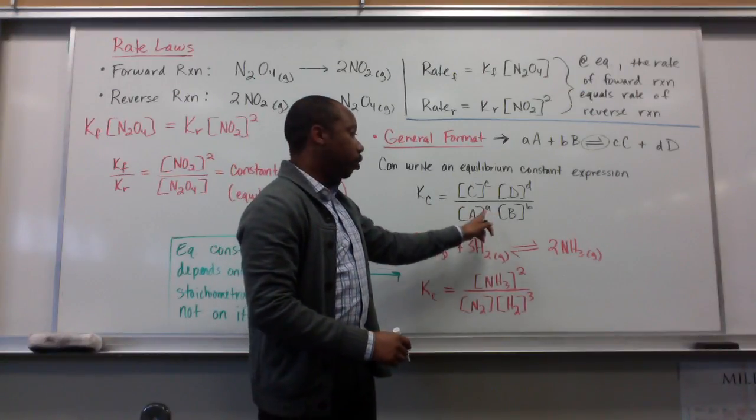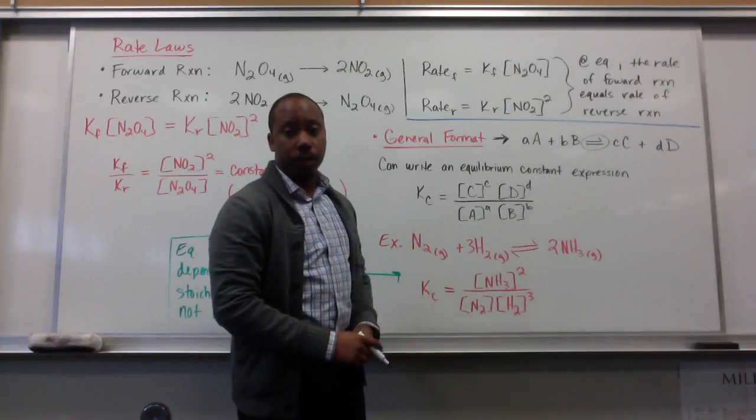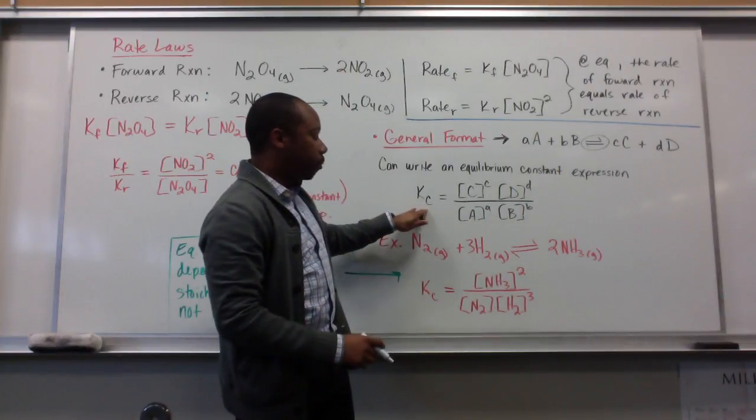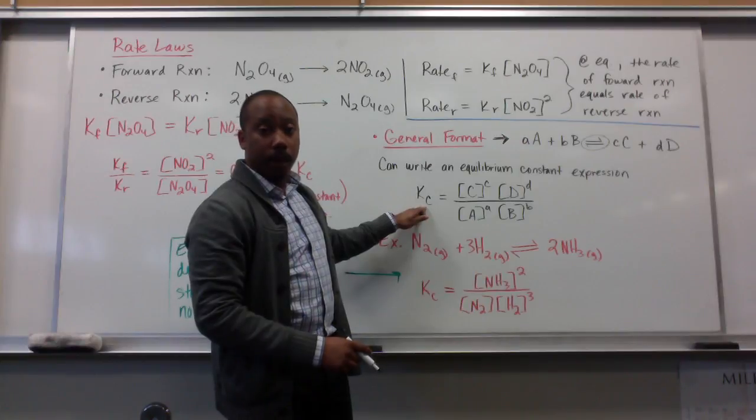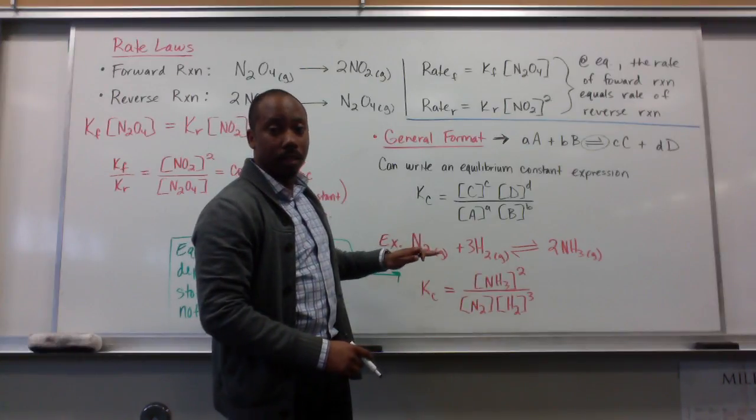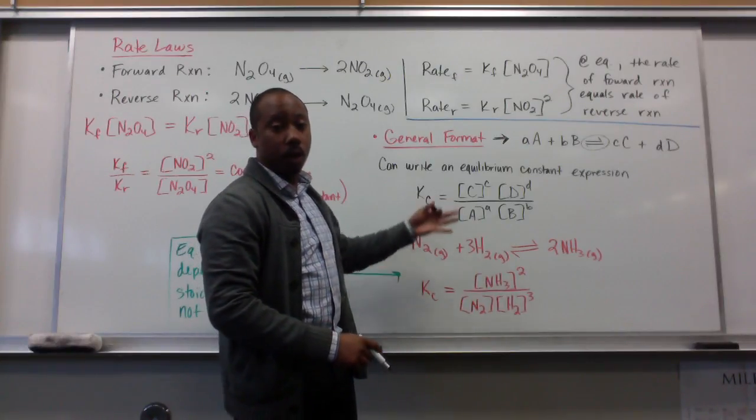and then dividing them by the concentrations of our reactants, with those raised to the power of their stoichiometric coefficient. That's what K sub C, our equilibrium expression constant, means, or how it can be solved or found.